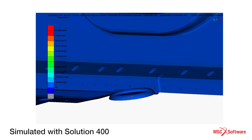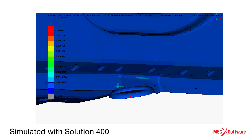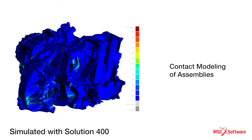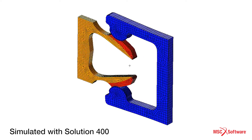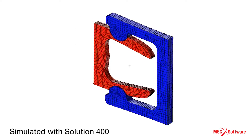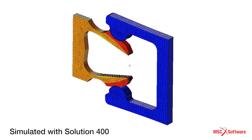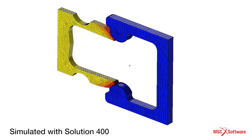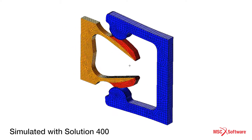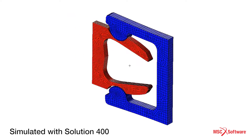A few of the application areas for Solution 400: contact modeling of assemblies where you have several parts you need to assemble, perhaps through bolt pretension, and you have contact between many parts with friction or, as we call it, glued contact.